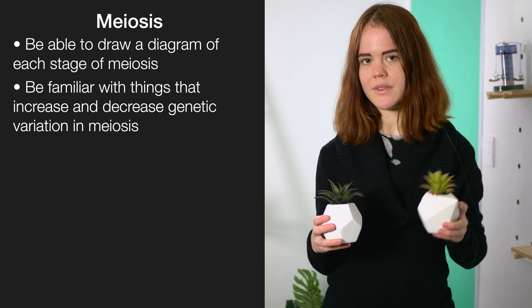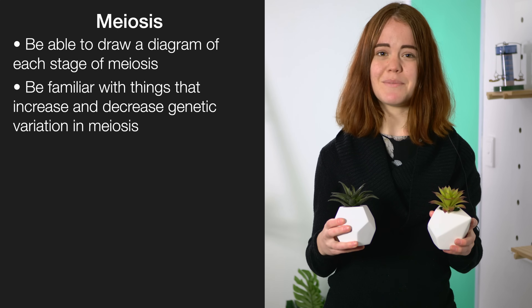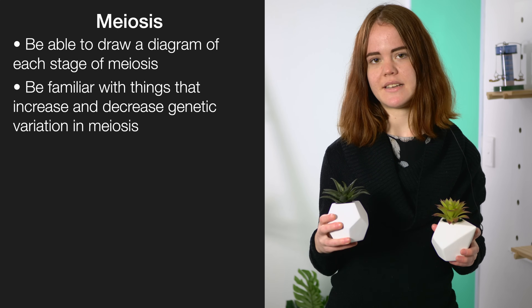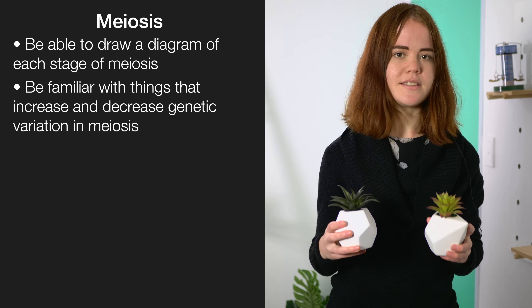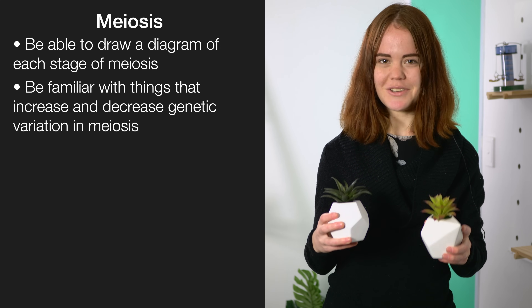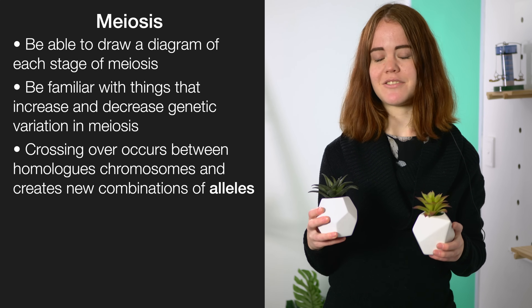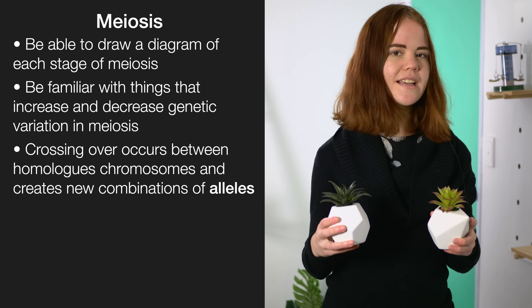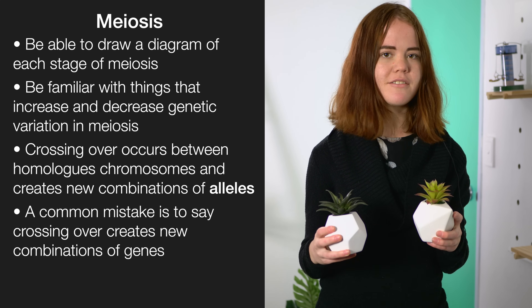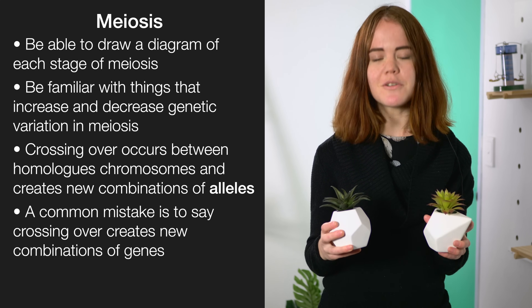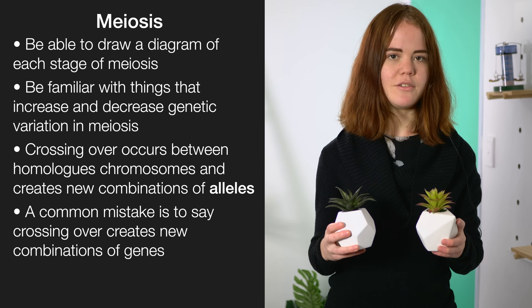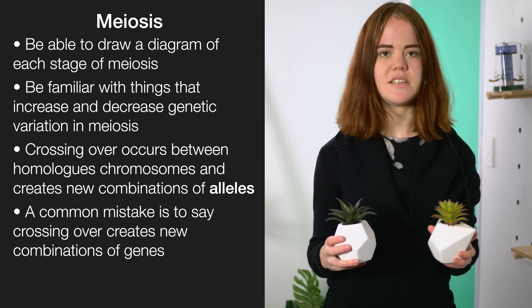You'll also want to be really familiar with things that decrease genetic variation in meiosis — so that's things like linked genes — and things that increase it, so that's things like crossing over and independent assortment. As a reminder, crossing over happens between homologous chromosomes during meiosis and it creates new combinations of alleles. A really common mistake is to say that it creates new combinations of genes — don't make this mistake, it's not true. You want to be really clear that you know the difference between chromosomes, alleles and genes.